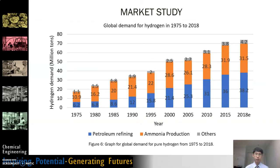As for hydrogen, the current pricing is around RM52 to RM65 per kg. Since 1975, the global demand for hydrogen has been increasing year to year up until 2018, and hydrogen is normally used for petroleum refining or ammonia production. This shows a huge demand for hydrogen gas, which will be economically beneficial to our project.